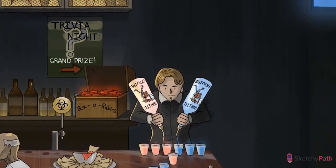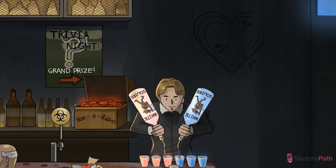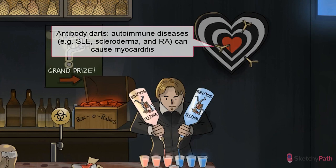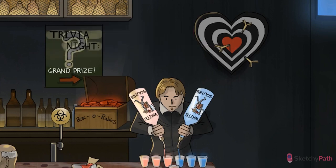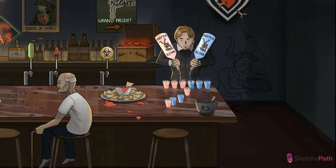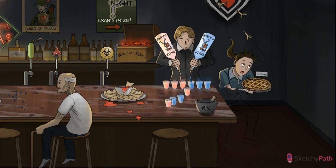The last type of myocarditis to cover is that caused by autoimmune disorders. Myocarditis is a common component of systemic lupus erythematosus, occurring in over 10% of patients. It's usually asymptomatic, though it can cause tachycardia, systolic dysfunction, and conduction defects such as heart block. Other autoimmune disorders associated with myocarditis include Wegener's granulomatosis, giant cell arteritis, and Takayasu arteritis.